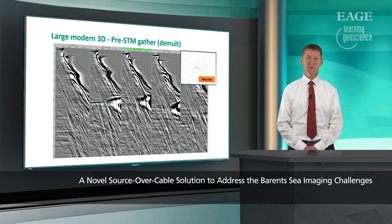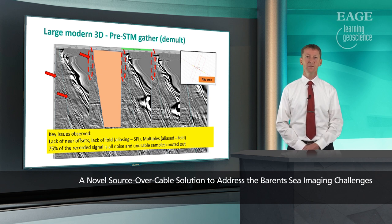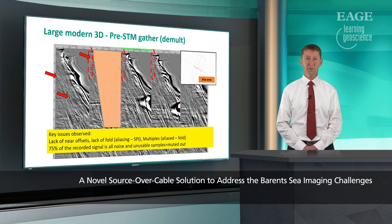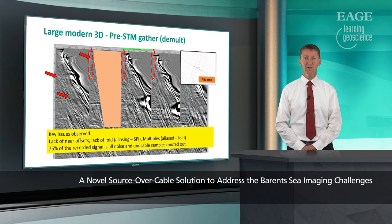Here you see gathers from a modern 3D acquisition done quite recently. These are migrated PSTM gathers, and I've highlighted some issues. It is very challenging to remove the multiples here because the data is not shot with dense enough shots in the sail line, so there is a lack of spatial sampling in the CMP domain. In addition, in the shallow part the near offsets are lacking, and a lot of the sensors are not recording any useful information — we are towing very long cables that really aren't bringing value to the stacking image in the end.